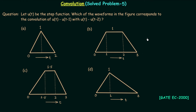Till now we have solved four problems of convolution and in this lecture we will solve the fifth problem. This problem is taken from the GATE Electronics and Communication 2000 paper. Let u(t) be the step function. Which of the waveforms in the figure corresponds to the convolution of u(t) minus u(t-1) with u(t) minus u(t-1)?